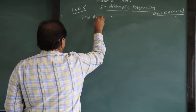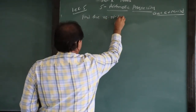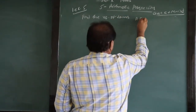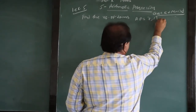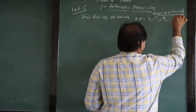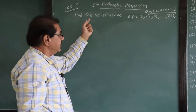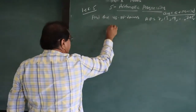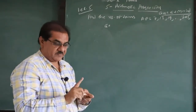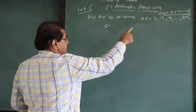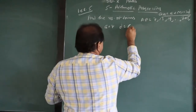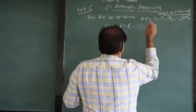Next question: find the number of terms in the AP 7, 13, 19, ... where the last term is 205. A is 7. Common difference D: 13 minus 7 is 6, and 19 minus 13 is 6. So the common difference is 6.